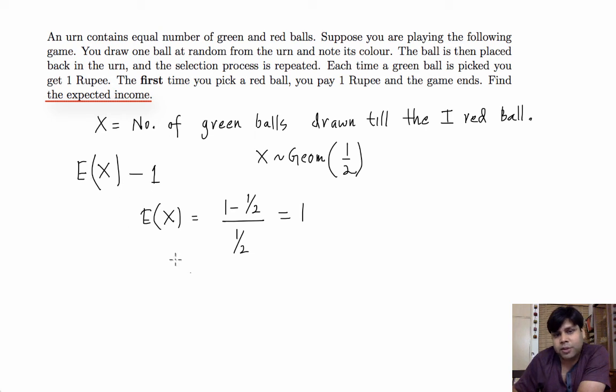So what is expected income then? Expected income is equal to expected value of X minus 1. So that is 0.